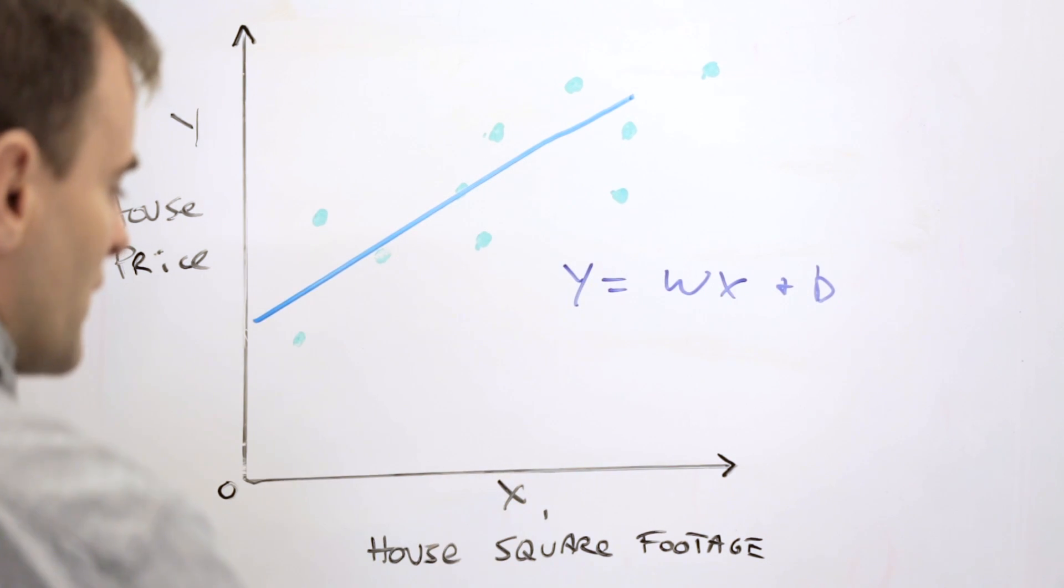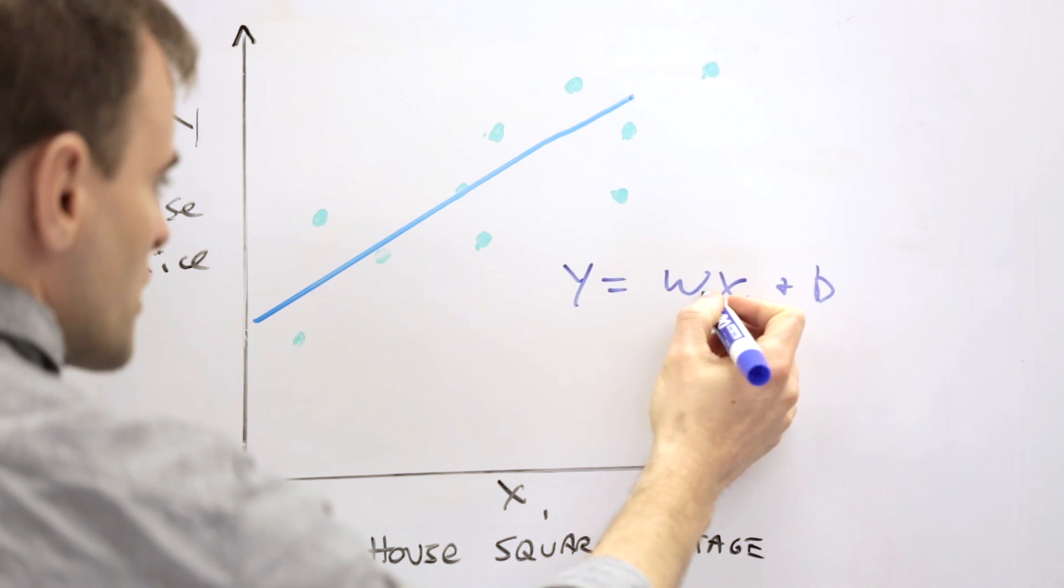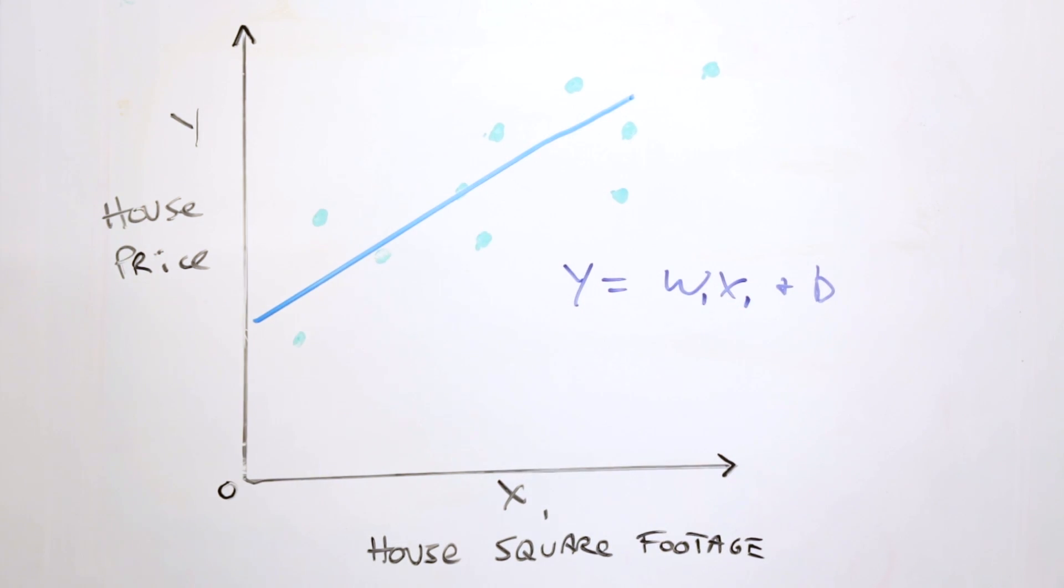Now you'll notice that we've got a little subscript here because we might be in more than one dimension. This b is a bias and the w gives us our slope.